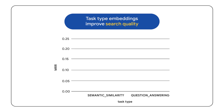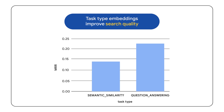The graph demonstrates that search quality, as measured by mean reciprocal rank (MRR), significantly improves when the appropriate task type — in this case question answering — is specified. This is based on an analysis of 10,000 natural question-answer pairs from the NQ open dataset. In many cases, switching from semantic similarity to question answering results in a 30% to 40% increase in MRR.